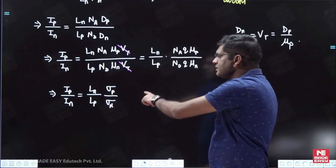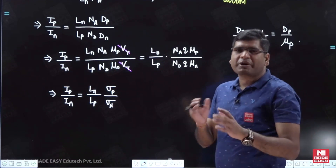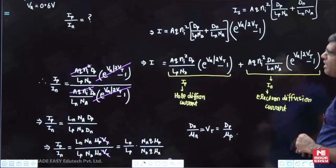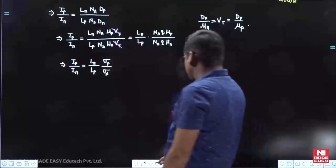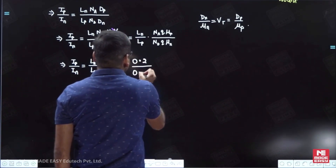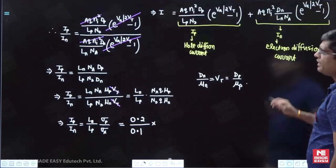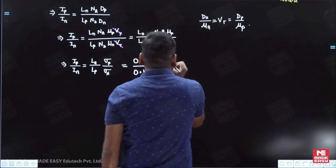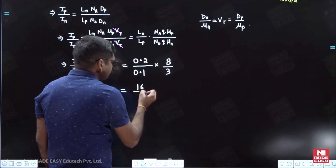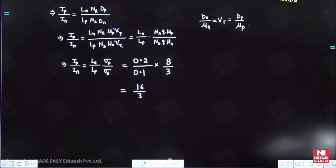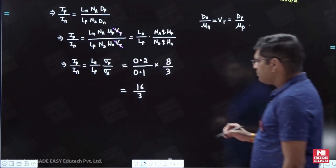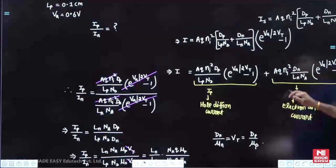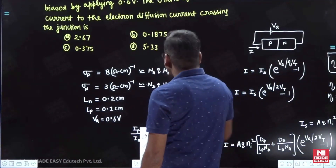Substituting values: Ln/Lp = 0.2/0.1 = 2, and sigma_p/sigma_n = 8/3. So I_p/I_n = 2 * (8/3) = 16/3 ≈ 5.33. Checking the options, option D (5.33) is the correct answer.